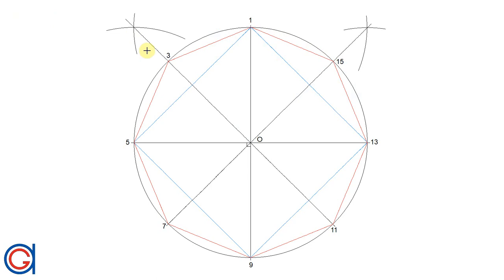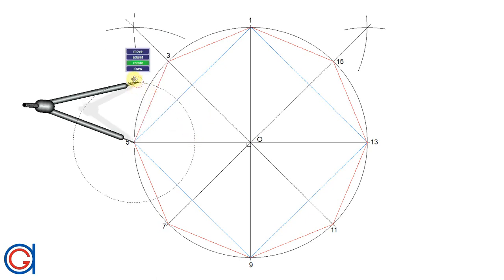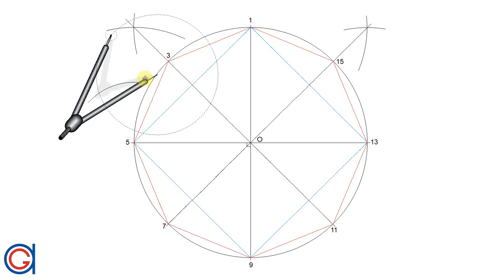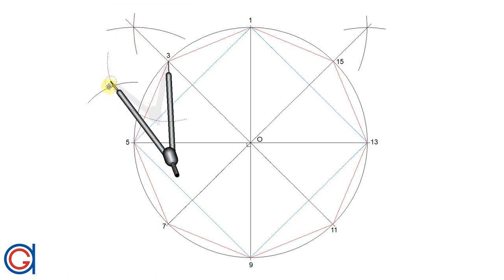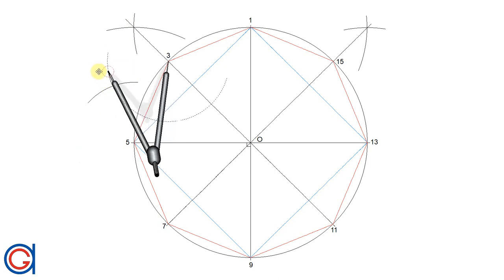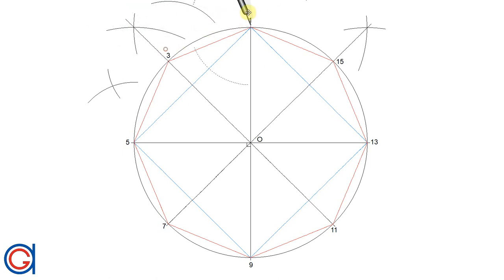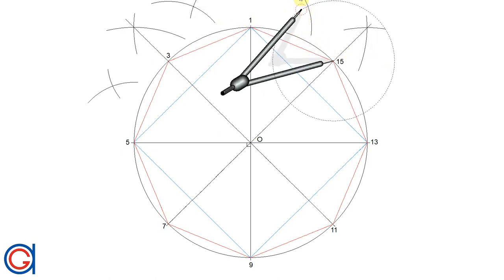To get the hexadecagon, we are going to divide the octagon into another eight parts by working out the perpendicular bisector of the top four sides of the octagon. Setting the compass on vertex 5 with a radius slightly longer than half the length of the side, we scribe an arc to the left. Setting the compass on vertex 3 with the same radius, we scribe another arc intersecting the previously drawn arc. We repeat this again with line segment 3 to 1: setting the compass on 3, we scribe an arc, and on 1 we scribe another arc.